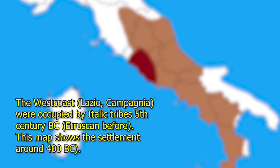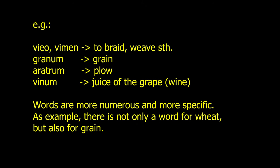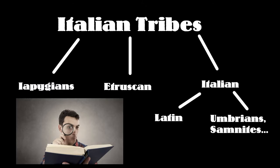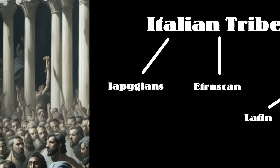The Italic tribes also inhabited the middle of the peninsula. They had, like the Iapigians, Indo-European origins, but they differed more from the Hellenic language. Their vocabulary was significantly broader, with more cultural words. The Italic tribes will be our main focus, and we will look at their development in more detail in later episodes. If you wish, I can create a more detailed video about the Etruscans and Iapigians as well.